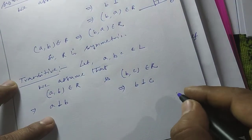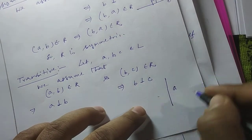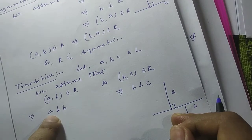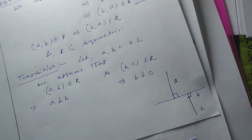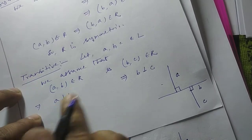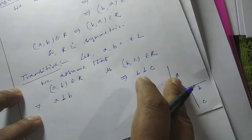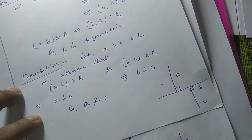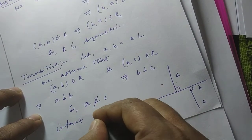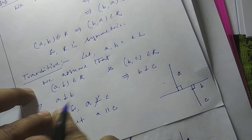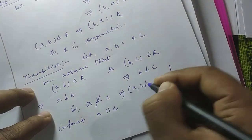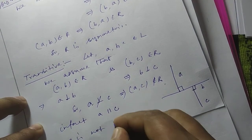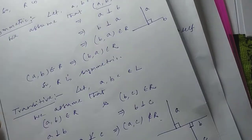Let us understand through a diagram. Here is line a, line b, and line c. A is perpendicular to b, and b is perpendicular to c. Now, what is the link between a and c? Looking at the diagram, you can see a is not perpendicular to c — in fact, a and c are parallel. So (a, c) does not belong to R. Therefore R is not transitive.